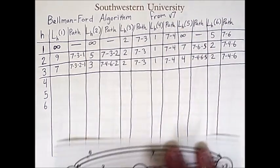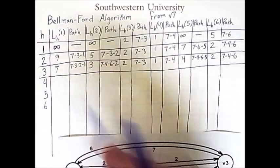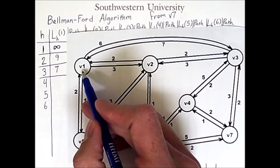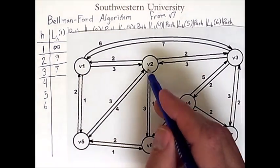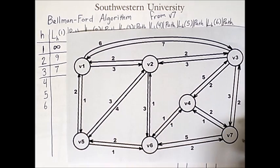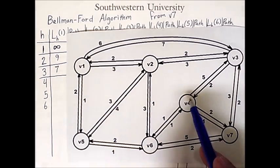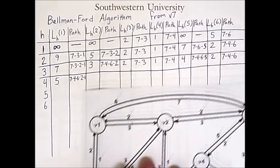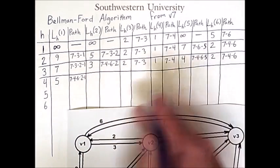Next, we will consider routes using 4 hops, and we once again find a more efficient route, this time to vertex 1. A better route than the 3 hop route we discovered is one that goes through vertex 4, then 6, then 2, then 1 for a cost of 1 plus 1 plus 1 plus 2 equals 5. The rest of the columns do not change.